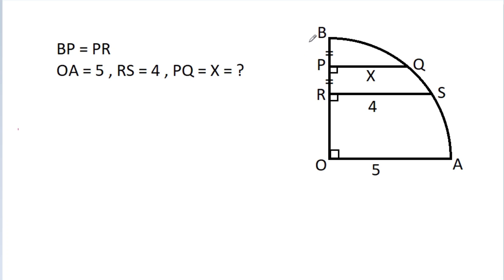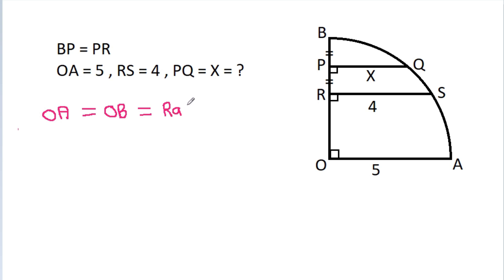In this video, we have given that BP is equal to PR, and OA is 5, RS is 4. We have to find PQ, that is X. So OA will be equal to OB, that is the radius, so OB will be equal to 5.